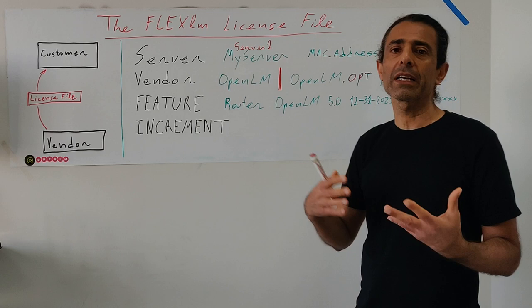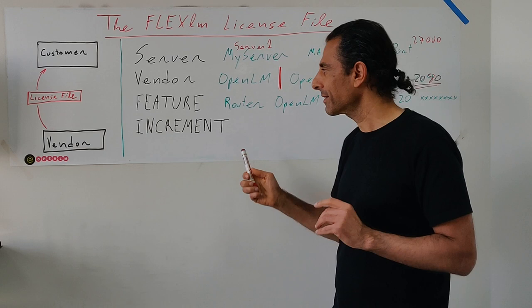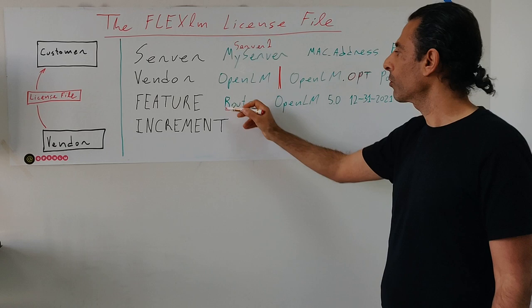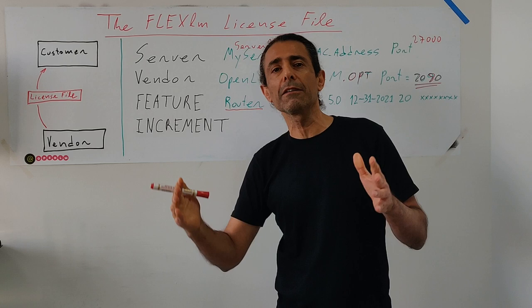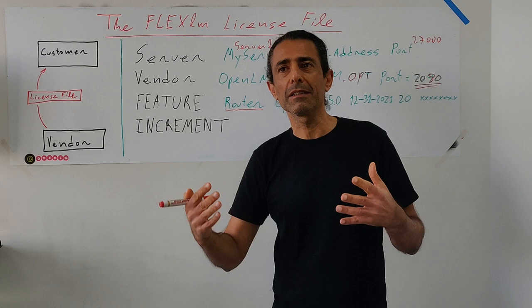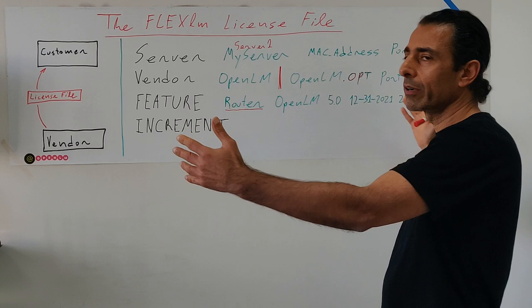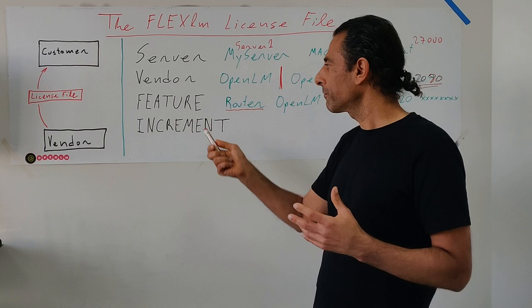The feature line is a very important line because this is what we are actually licensed to use. In FlexLM, the unit is the feature — that's a very critical thing. FEATURE is the keyword. The next element is the name of the product — it can be anything, for example 'OpenLM_router'. But it can be any name. Typically there is a difference between the feature name and the actual name of the product. For example, the full name might be 'OpenLM License Router' but here we use just a short name. In other cases you might see numbers or a combination of letters and numbers — this is the feature name.